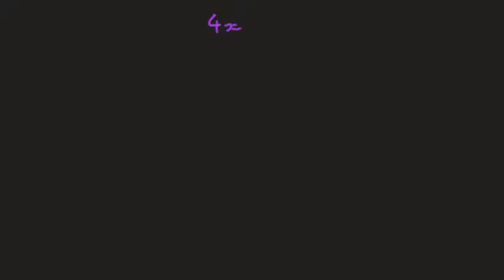Same thing here — we can't divide by the 4 or the 3, so let's multiply in. 4 times x is 4x, 4 times minus 1 is minus 4, minus 3 times x is minus 3x, and minus 3 times 2 is minus 6, and that equals 26.